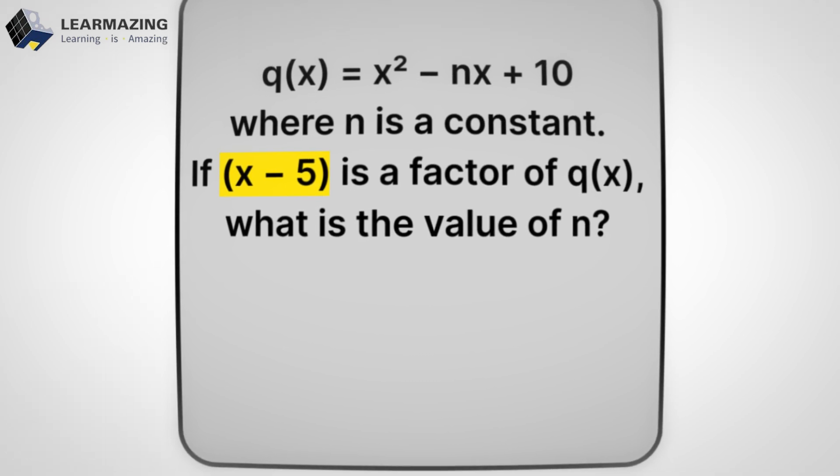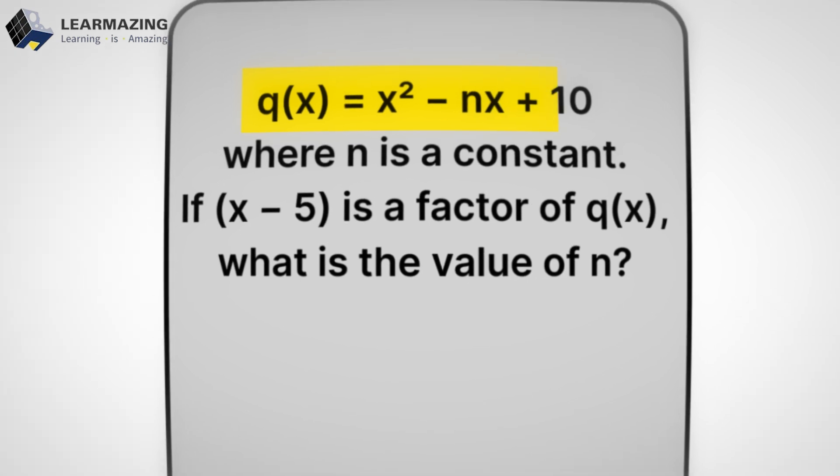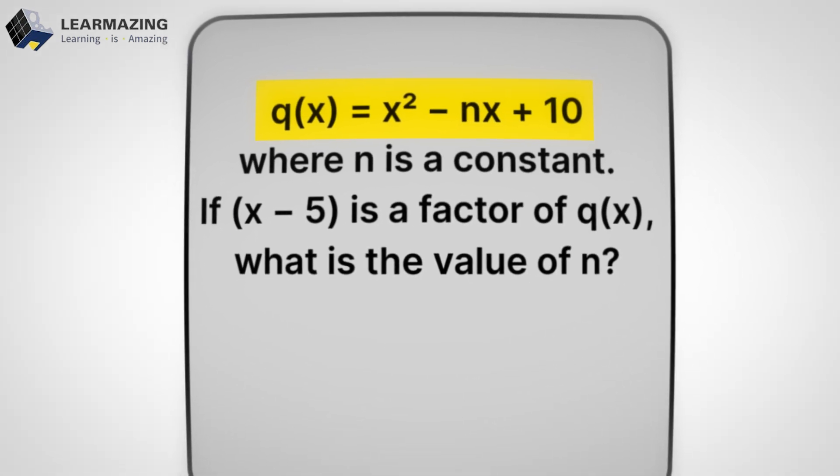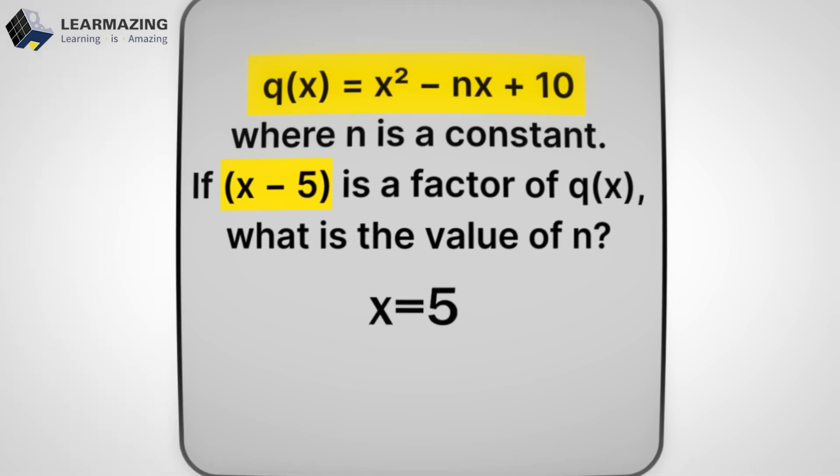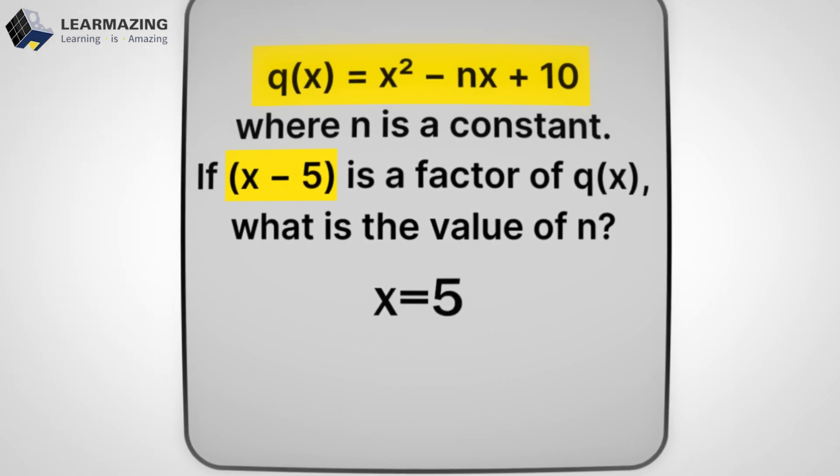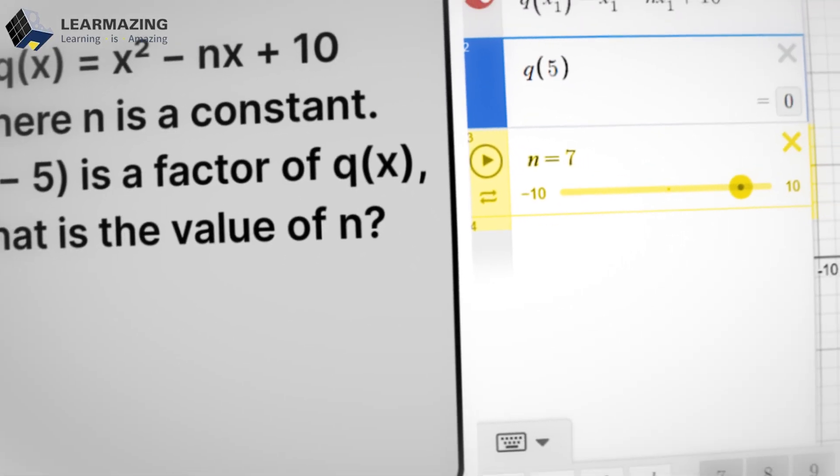Here's how it works. We've got q(x) = x² - nx + 10. So we're told x - 5 is a factor. That means the root is x = 5. Now watch what Desmos does. It tells us n equals 7 instantly.